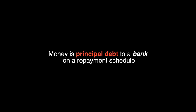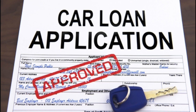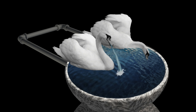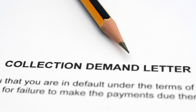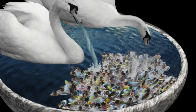Money is principal debt to a bank on a repayment schedule. This simplification is justified because most money is created as mortgages or other time payment debt. Therefore, the outflow from the fountain swan must be a demand — namely the demand for exactly the same amount of water per unit of time that had previously been sucked up by its mate. This is because water entering the input pipe represents the principal portion of a bank loan that must be repaid in full — by the debtors all trying to stay afloat in the pond. In this water analogy, I shall make our starting point a demand for 10 litres per minute from a supply of 10 litres per minute.